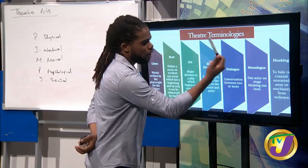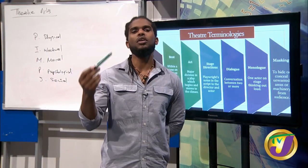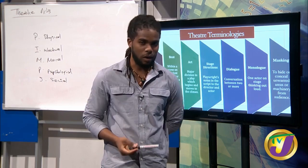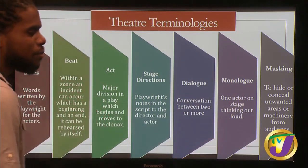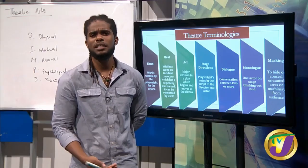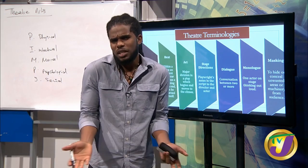Next we have dialogue — conversation between two or more characters. When you watch a play you follow the story through the use of dialogue. Then we have monologue — one actor on stage thinking out loud, just talking to the audience in whatever context the story is being told. Finally, we have masking — to hide or conceal unwanted areas or machinery from the audience. For example, a smoke machine: you don't want the audience to see it, so you place it where it's hidden. That would spoil the magic.